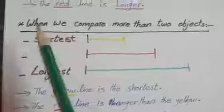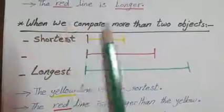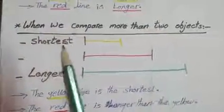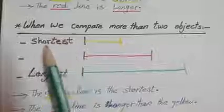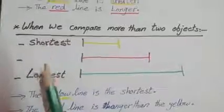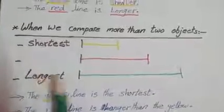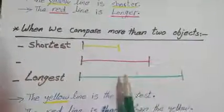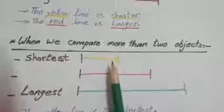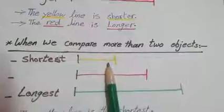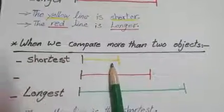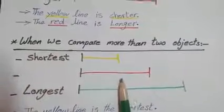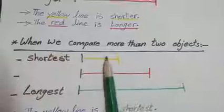But when we compare more than two objects, I have to put -est at the end of short and long. Yellow, red, green — the yellow line is the shortest one, the red line is longer than the yellow, and the green line is the longest one.